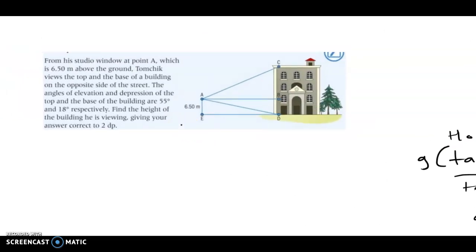So it says, from his studio window at a point A, which is 6.5 meters above the ground, Tomczyk views the top and the base of a building on the opposite side of the street. The angles of elevation and depression of the top and the base of the building are 55 and 18, respectively. Find the height of the building. So this angle right here is the 55, and this angle here is the 18, and this is 90 degrees.